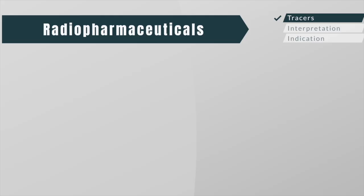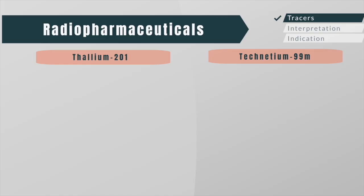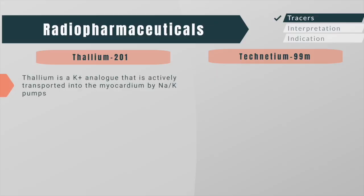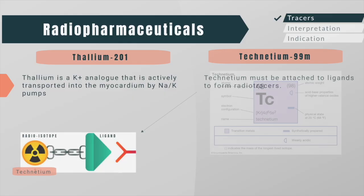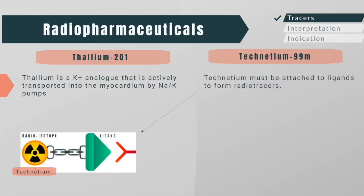The two radiopharmaceuticals used for nuclear stress testing are thallium and technetium. Thallium was the first agent used and is a potassium analog actively transported into the myocardium by sodium-potassium pumps. Technetium, on the other hand, is an isolated element that does not bind to cell receptors; it must be attached to ligands to form radiotracers. The two commercially available ligands are sestamibi and tetraphosmin, both of which diffuse through the cell membrane and localize in the mitochondria.